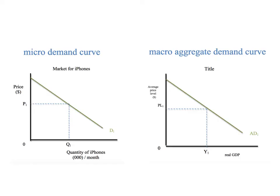Take a look at these two graphs. This is the macroeconomic aggregate demand curve on the right, and the micro demand curve over here. You've seen this curve in previous videos from microeconomics. But macroeconomics considers the working of the whole economy, including all the goods and services that are demanded. While the microeconomic demand curve has price on the vertical axis,